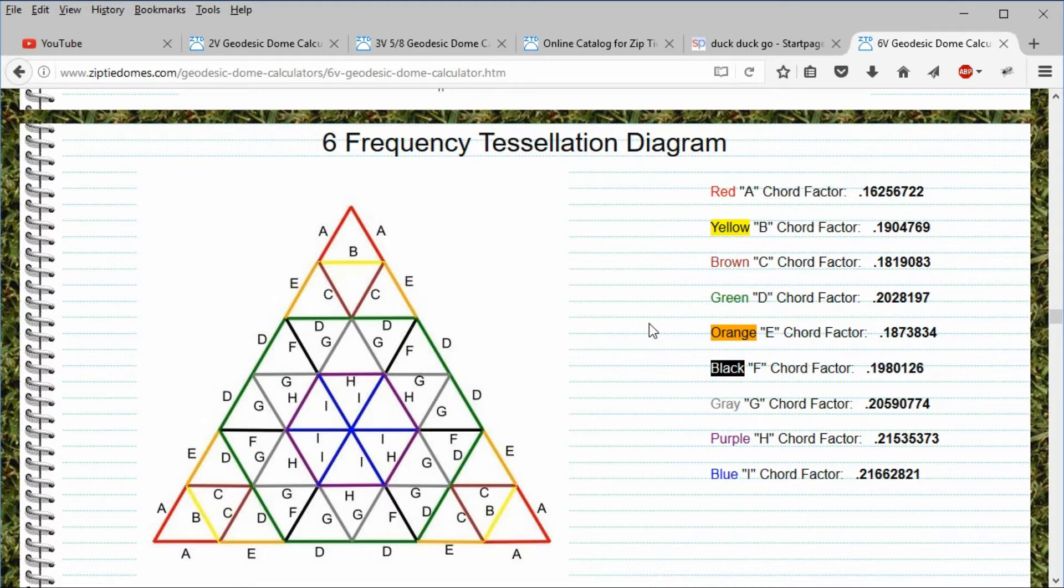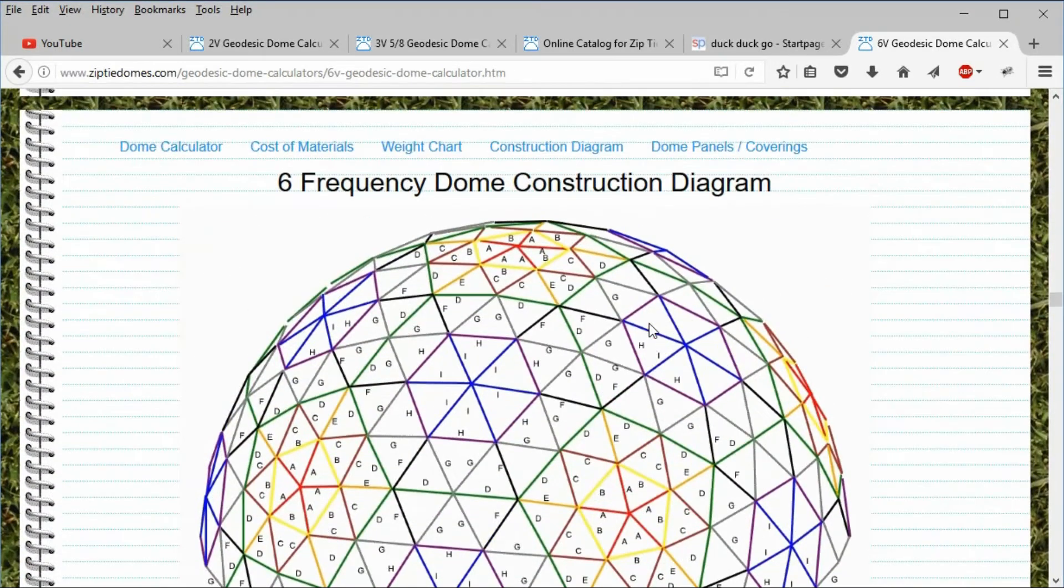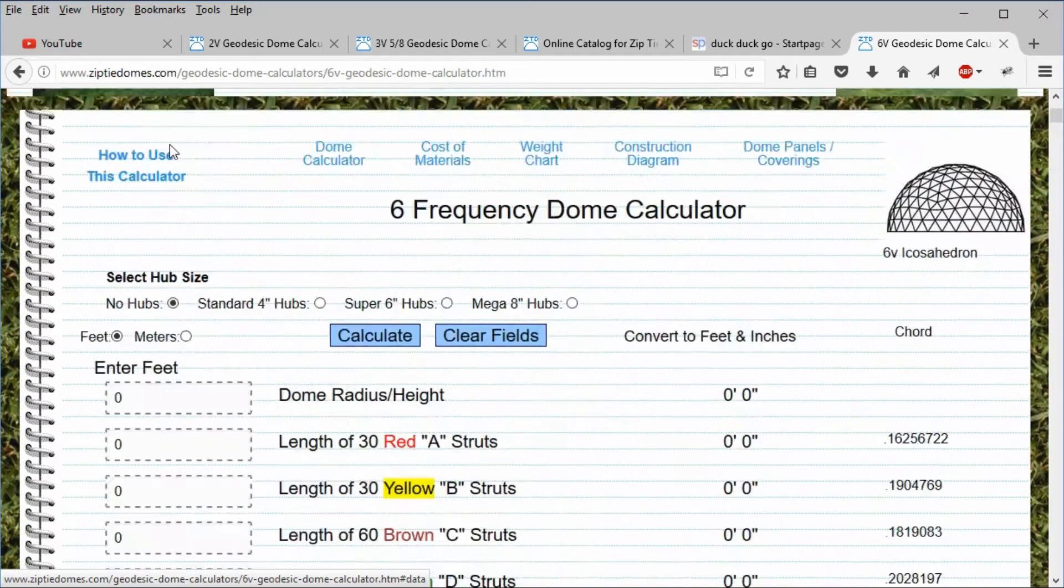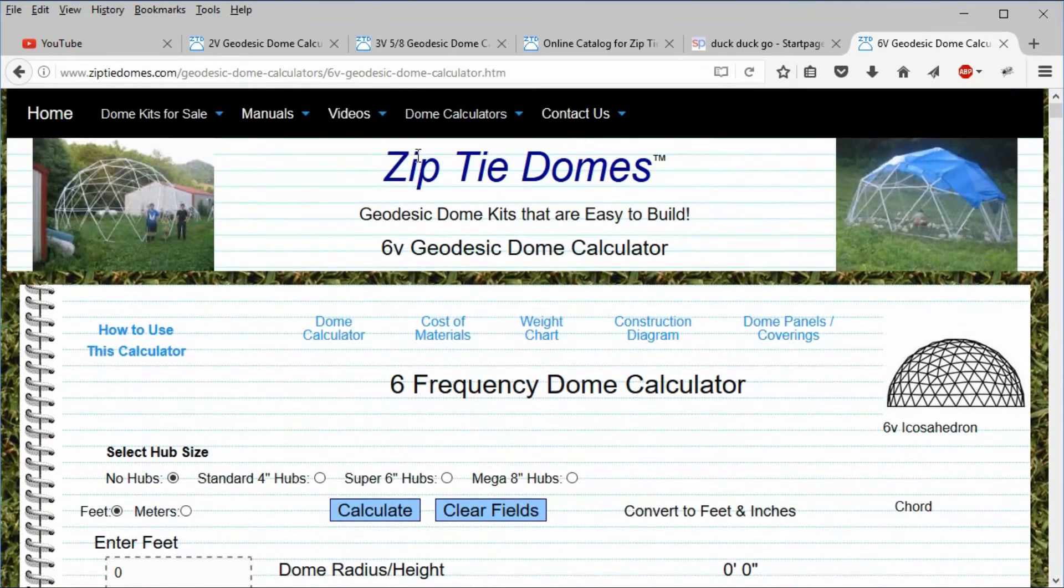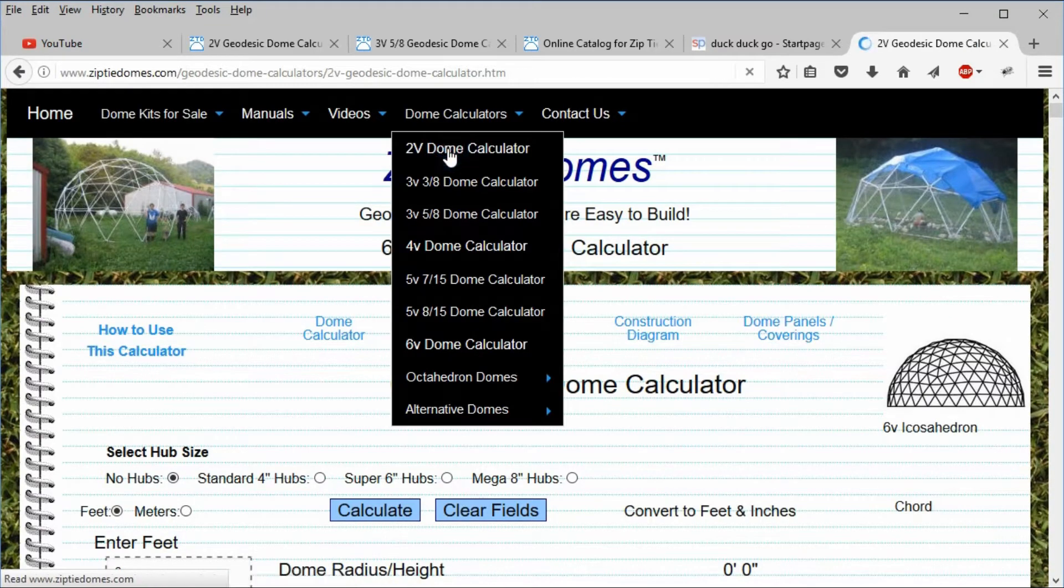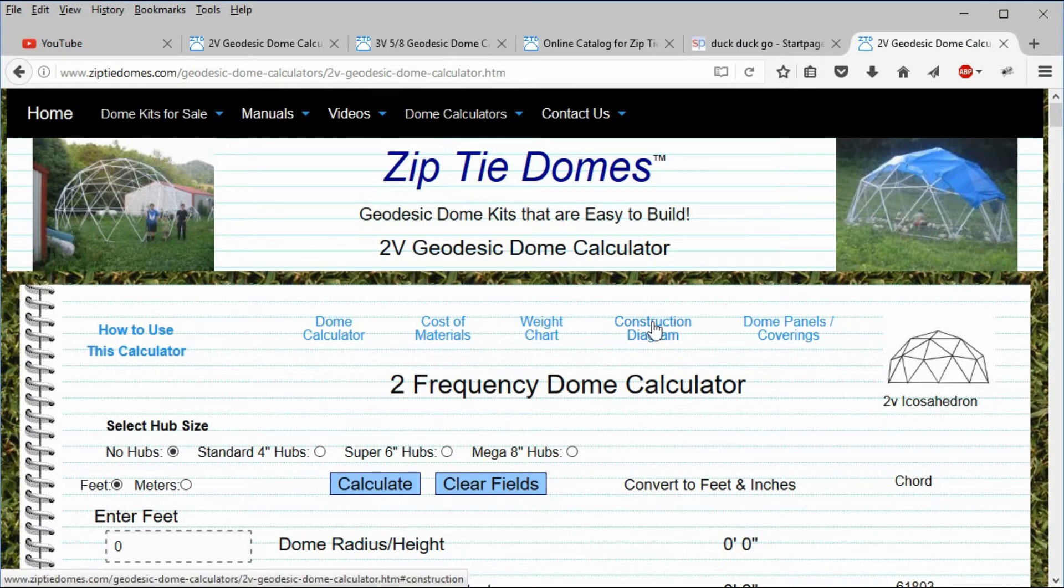There is a recognizable pattern for the 6 frequency dome, but it is still very complicated. Scroll back up and click the dome calculator link to go to the top of the page. Select the 2 frequency dome from the drop-down list and click the construction diagram link.